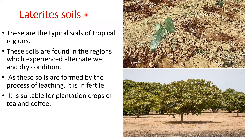The next is laterite soil. These are the typical soils of tropical regions, found in areas which experience alternate wet and dry conditions, like Kerala. These soils are formed by the process of leaching — that is, water-soluble nutrients are washed away — making them infertile. They are suitable for plantation crops of tea and coffee, and cashew nuts are also well grown in this soil.